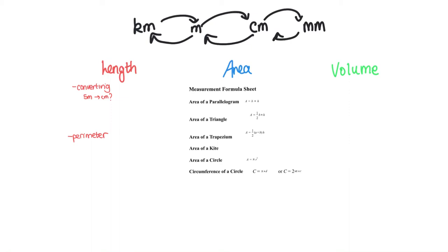Welcome to your 15-minute or less summary of Year 8 measurement. When you look at the measurement topic, there are three main areas we looked at: length, area, and volume. I'll try and split the revision into these three areas so it gives you a better idea of what we're talking about. I'm going to be going rather fast, so if there's anything you're not sure of, feel free to look back in the measurement playlist and watch a video in more detail of an area you're not so confident in.